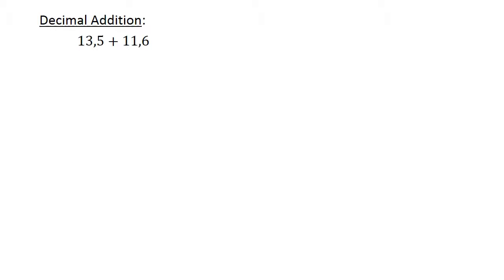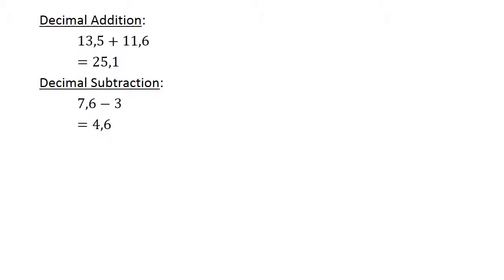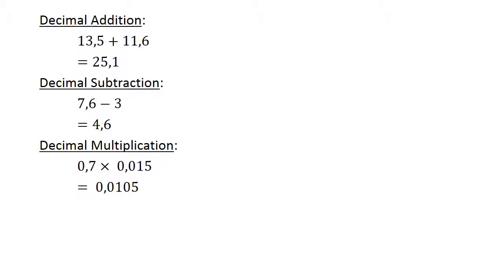Decimal Addition: 13,5 plus 11,6 equals 25,1. Decimal Subtraction: 7,6 minus 3 equals 4,6. Decimal Multiplication: 0,7 times 0,015 equals 0,0105.